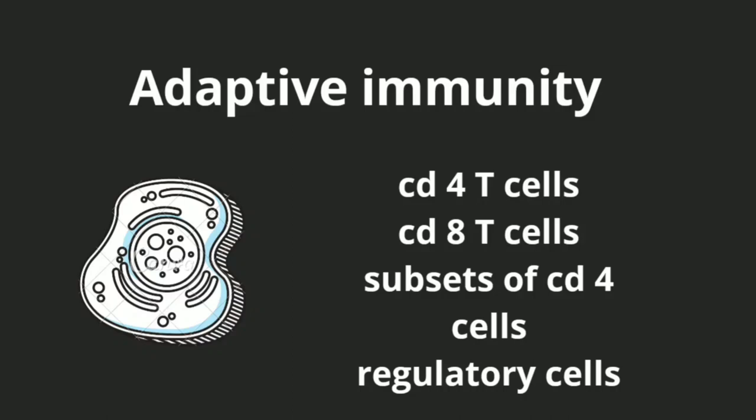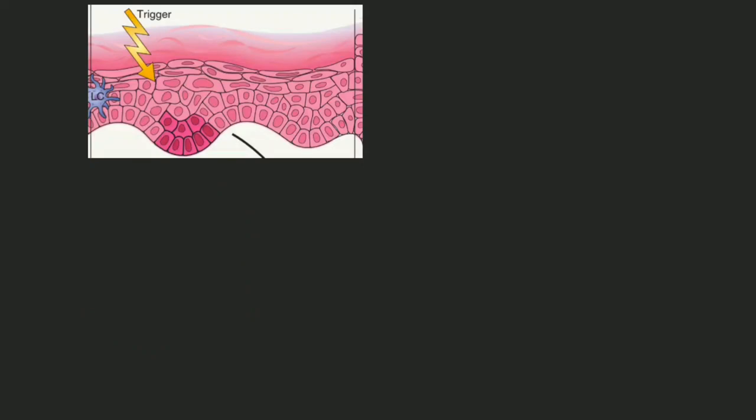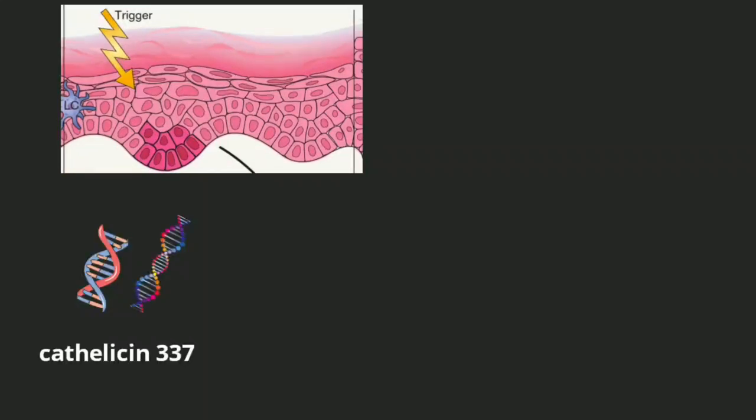Now let's start with the actual disease process. It starts in the epidermis due to an unknown trigger. Stressed keratinocytes release DNA and RNA, which binds with an antimicrobial peptide. The antimicrobial peptide in psoriatic patients is cathelicidin LL-37. These antimicrobial peptides are basically a part of the defense system.